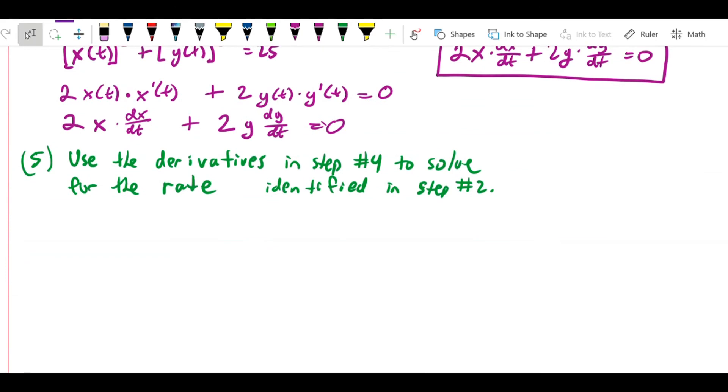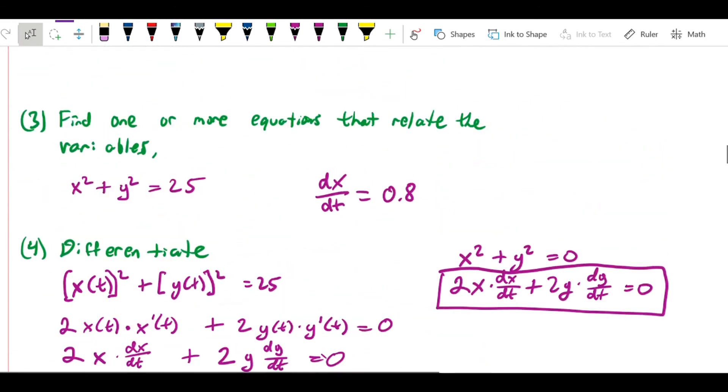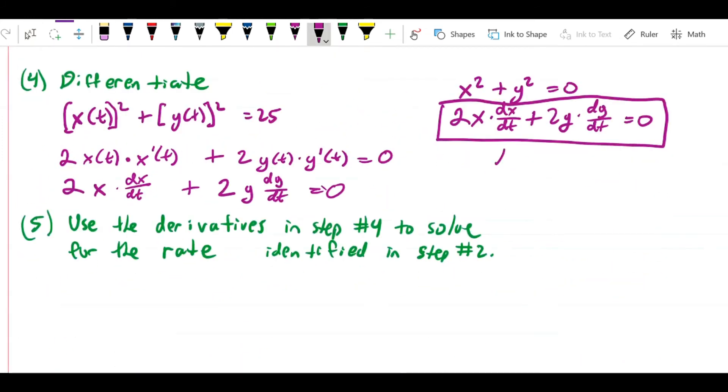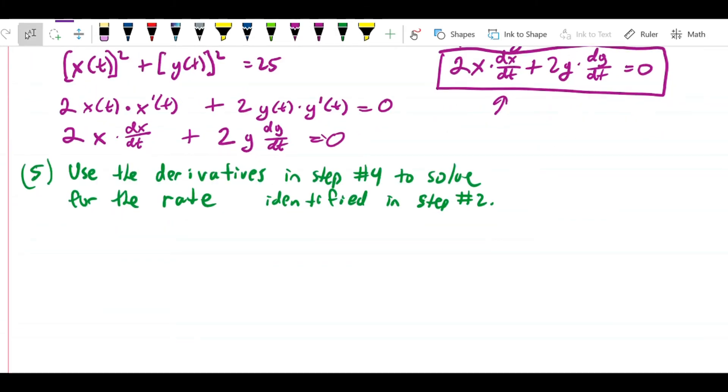The last thing is use the derivatives to solve for the rate. The rate that we're looking for is dy over dt. I want to take this equation and solve for dy over dt in terms of everything else. Moving 2x dx dt over to the other side of the equation, I get 2y dy dt equals negative 2x dx dt.